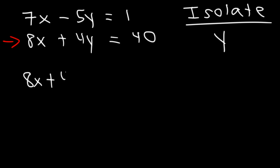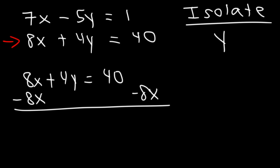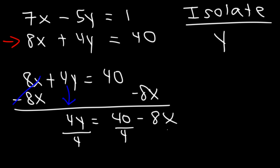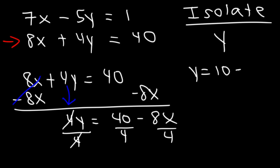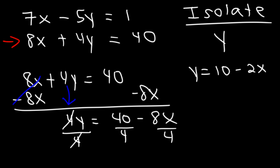Let's start with the second equation and isolate y. Begin by subtracting both sides by 8x, giving us 4y is equal to 40 minus 8x. Now divide everything by 4: 40 divided by 4 is 10, and negative 8x divided by 4 is negative 2x. So we have y is equal to 10 minus 2x.